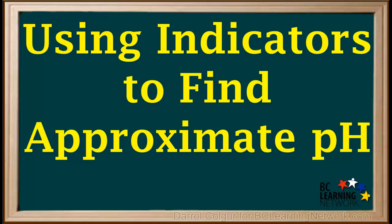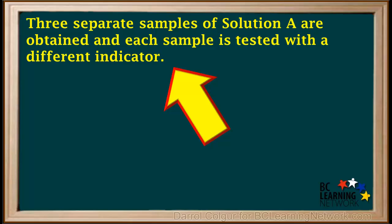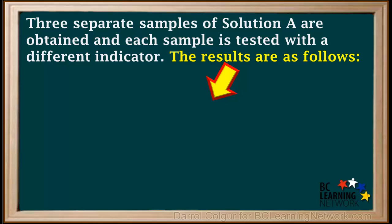Testing samples of a given solution with various indicators allows one to narrow down the range of possible pH values for the solution. We'll show you how this works using a couple of examples. In our first example question, we're given that three separate samples of solution A are obtained and each sample is tested with a different indicator. The results are shown on the following table.